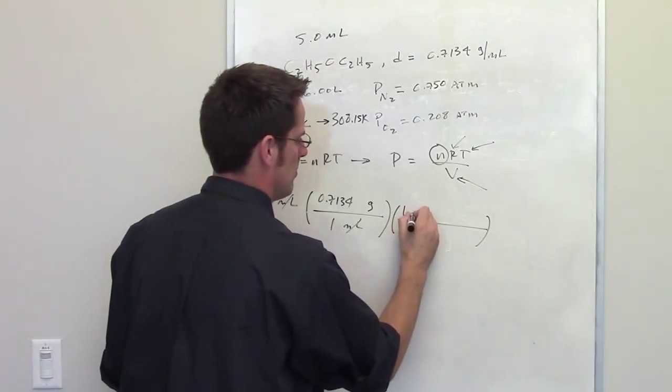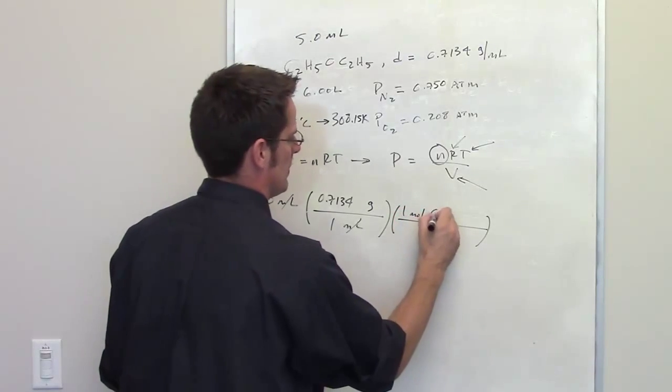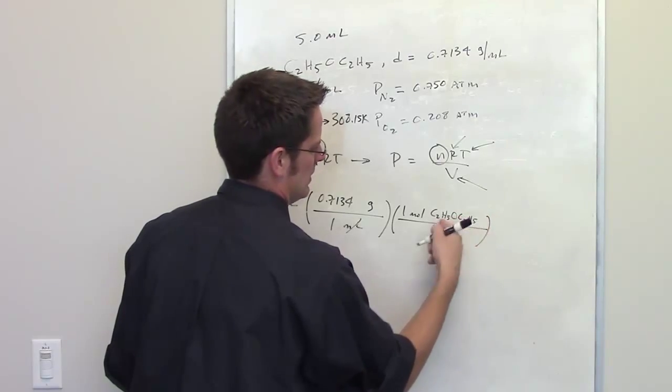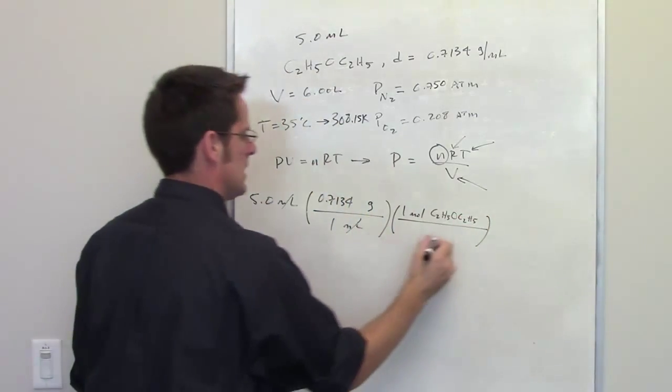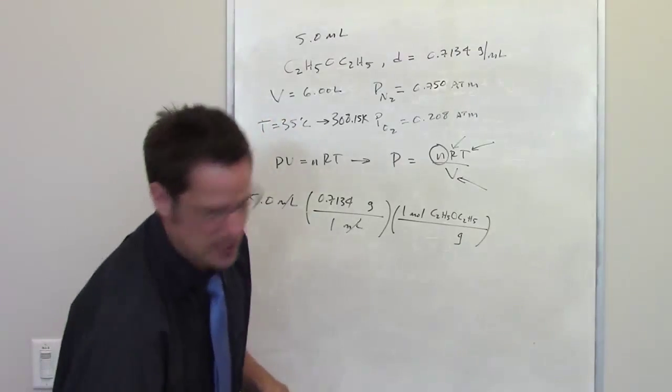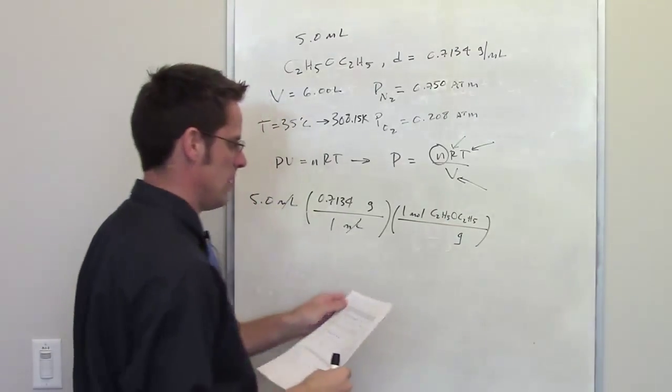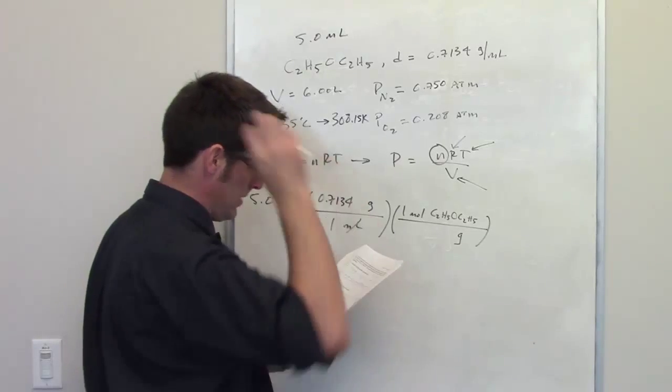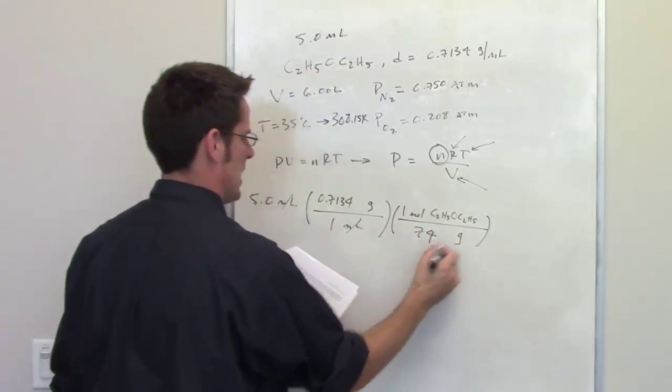I can now write down 1 mole of diethyl ether whose formula is C2H5O, equals a certain number of grams. So we can calculate that out by recognizing each carbon weighs 12, oxygen weighs 16, hydrogen weighs 1 each and I calculate that out as being 74 grams.